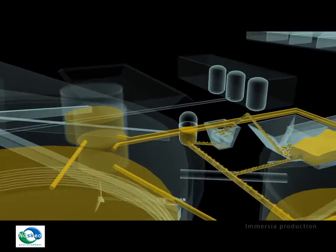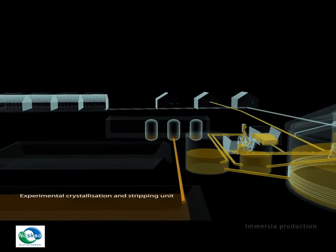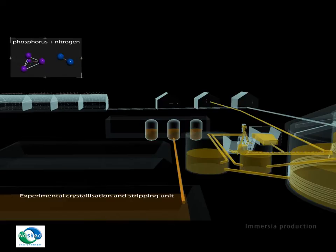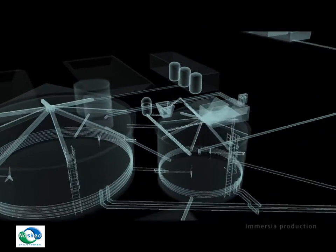Liquid sludge is used for land spreading. Nascio Environment has also developed a process to recover nitrogen and phosphorus in the liquid part of digested sludge in order to facilitate their usage as fertilizers.